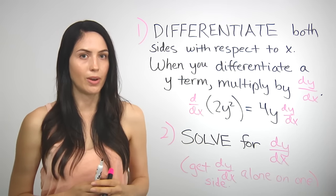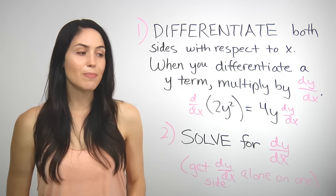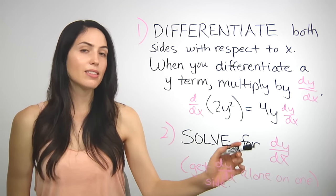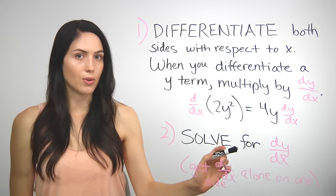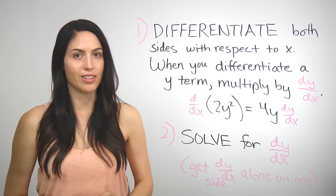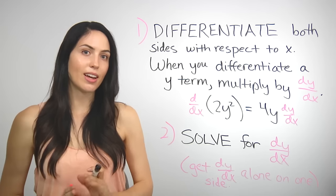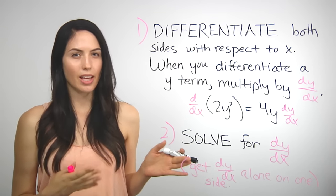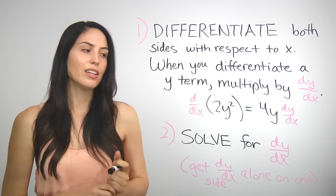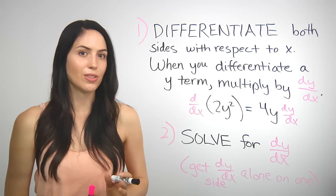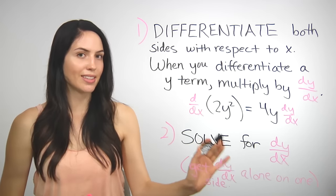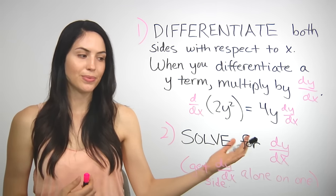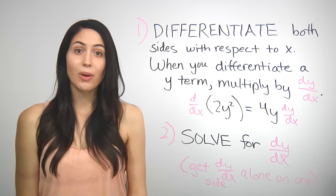The second step is to just solve for dy/dx. That means get dy/dx alone on one side so that your expression looks like dy/dx equals something. There are some algebra tricks you may need to do this, and I'll show you those so that you can always get dy/dx equals something as your solution.